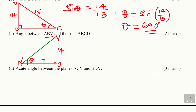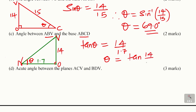Taking the tan inverse of 14 divided by 1.7 gives 83.1 degrees. So the angle between plane ABV and the base ABCD is 83.1 degrees.